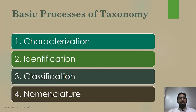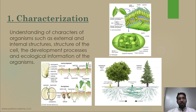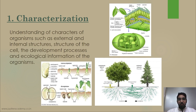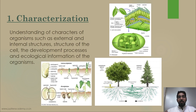Now the four basic processes of taxonomy. The first is characterization — the study and understanding of the characters of an organism. We observe what kinds of different characters an organism has. We examine not only external structures but also internal structures, the structure of the cell, developmental processes, and the ecological information of the organism — how it interacts with other organisms in the ecosystem.